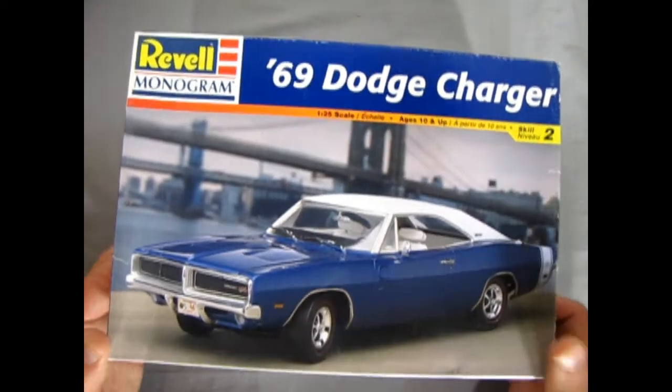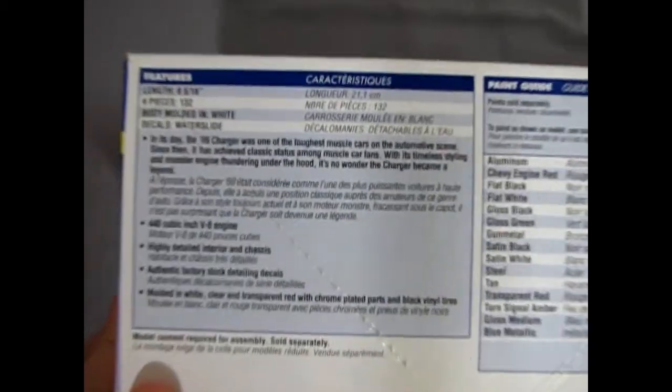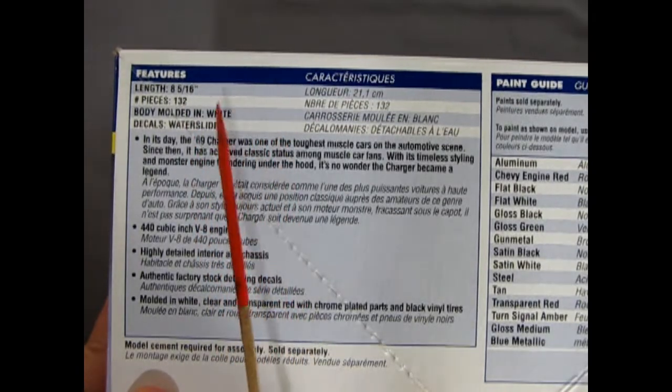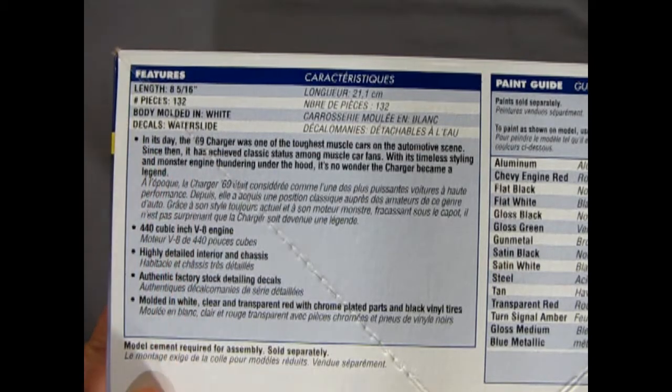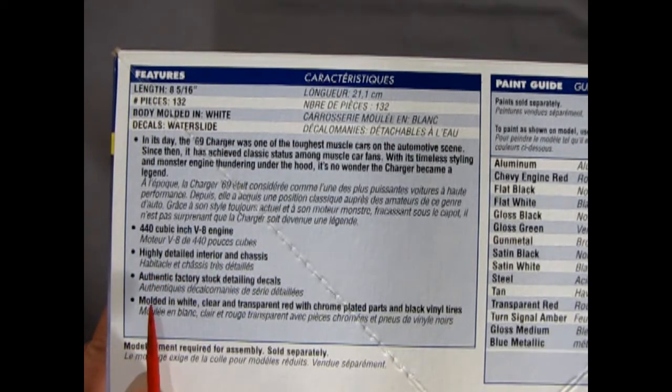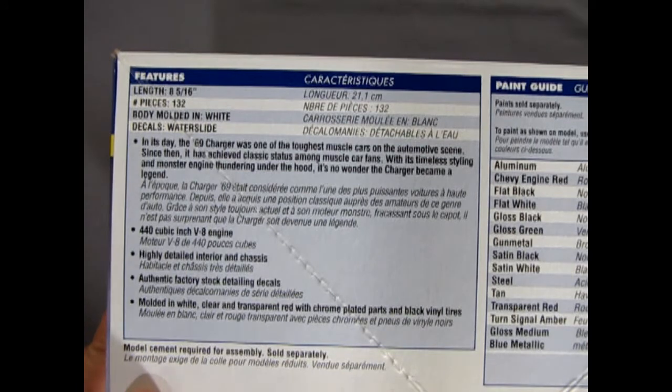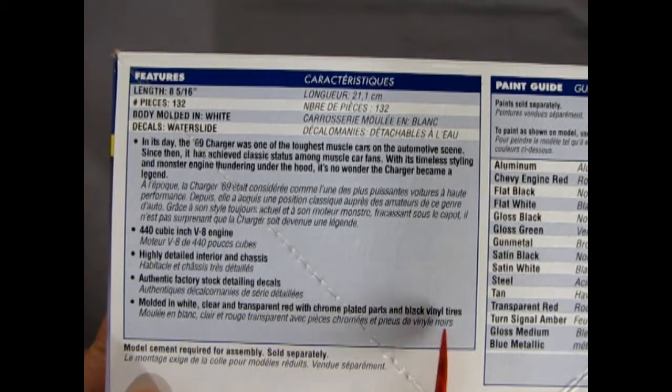So let's just take a look at the box here for a minute and here we can see all the exciting features of this kit. It is 8 and 5/16 inches long, 132 pieces, molded in white, water slide decals, comes with a 440 cubic inch V8 engine, highly detailed interior and chassis, authentic factory stock detailing decals, and molded in white, clear transparent red with chrome plated parts and black vinyl tires.